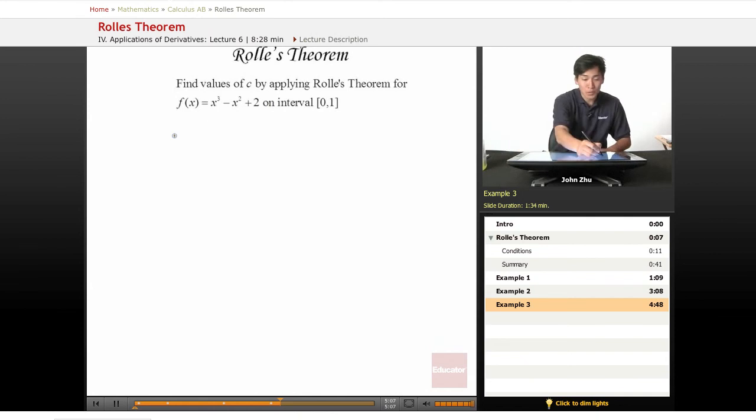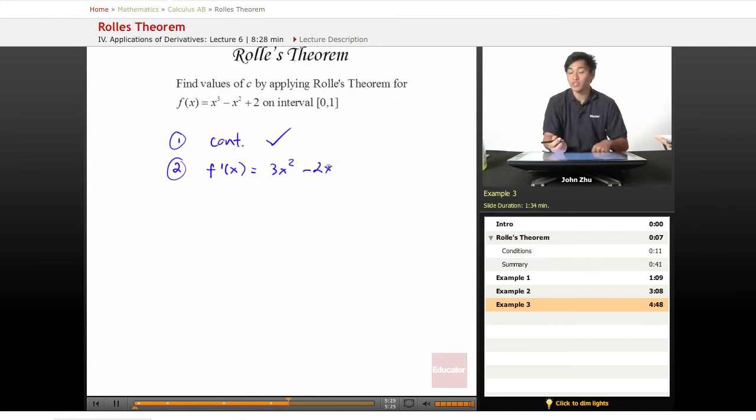So, checking the conditions: one, is it continuous? Yes, it is continuous. Two, is it differentiable everywhere within the interval? Well, f prime of x equals 3x squared minus 2x, it's a very normal function.